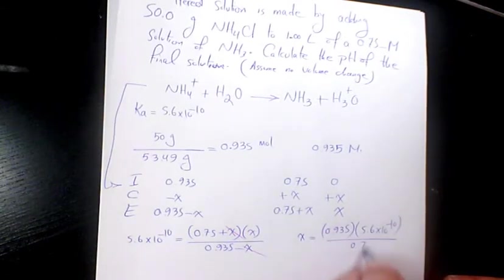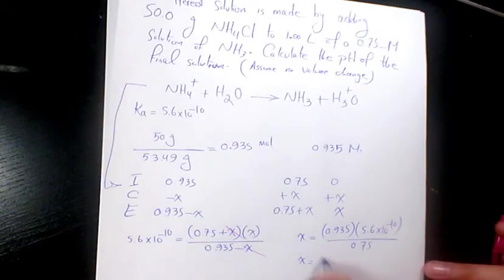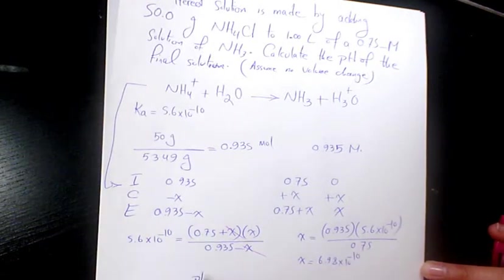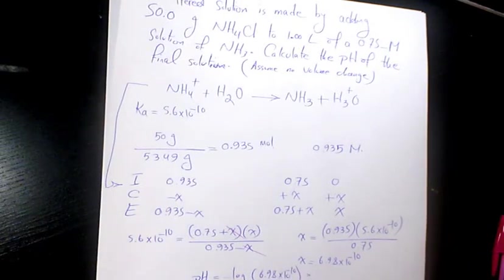Divided by 0.75, so x equals 0.935 times 5.6 times 10 to the power of negative 10 divided by 0.75, which equals 6.98 times 10 to the power of negative 10. pH equals negative log of 6.98 times 10 to the power of negative 10.